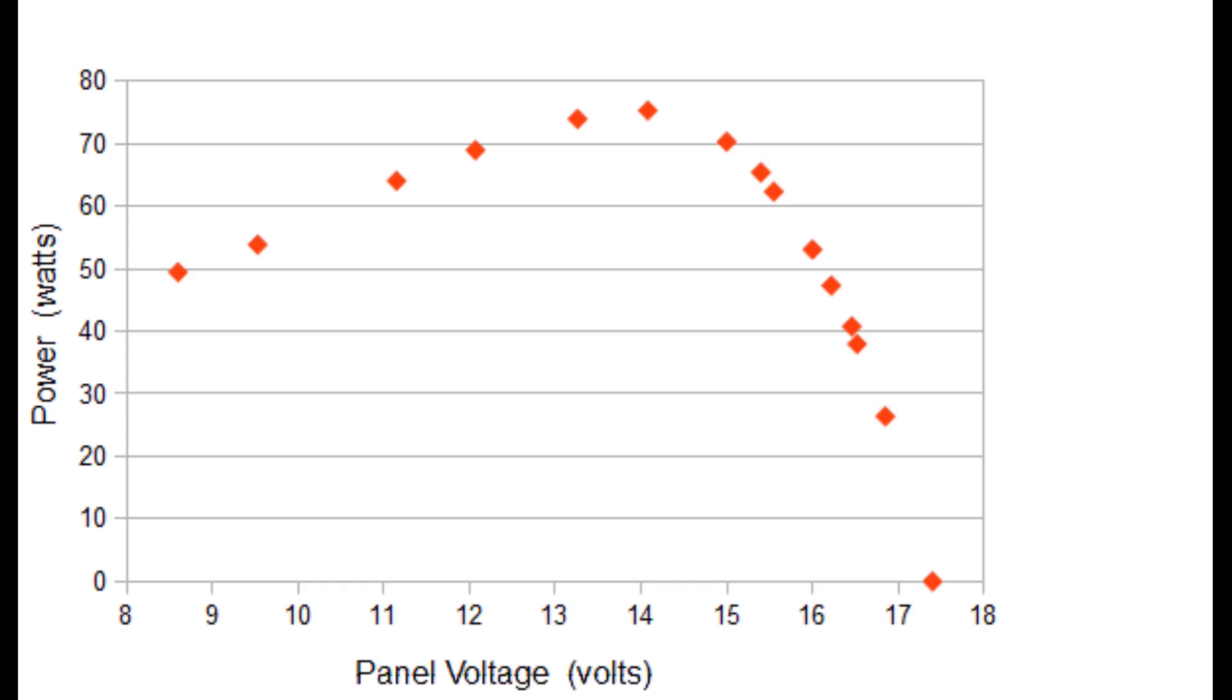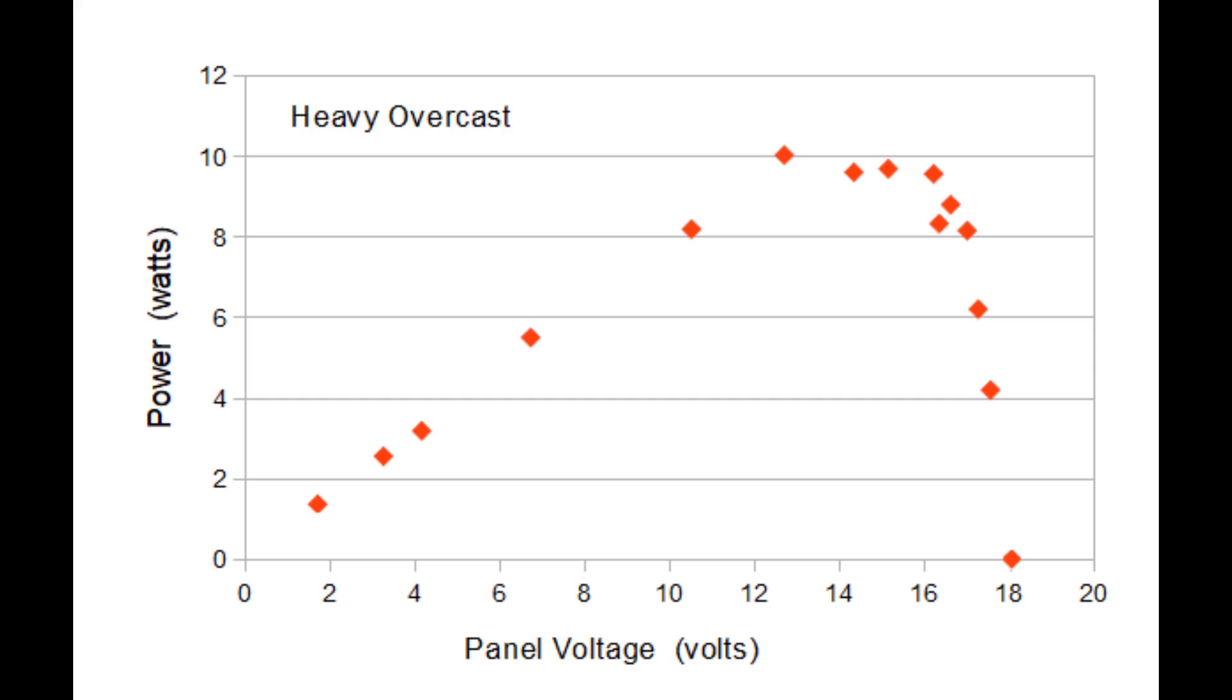Here's the result of those experiments. The x-axis is panel voltage and the y-axis is power, which is voltage times current. It's a typical MPPT curve, but once the panels warmed up in the sun, the maximum was closer to 14 volts rather than 17 volts. Of course that's on a sunny day, but turns out even on an overcast day, the maximum power point doesn't change much. Here the panel is only putting out 10 watts instead of 75 watts, but the maximum power point is still about 14 volts.